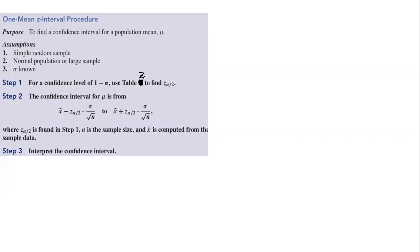There are three assumptions. Number one, there must be a random sample. Number two, normal population or large sample. And sigma, the standard deviation of the population, must be known.